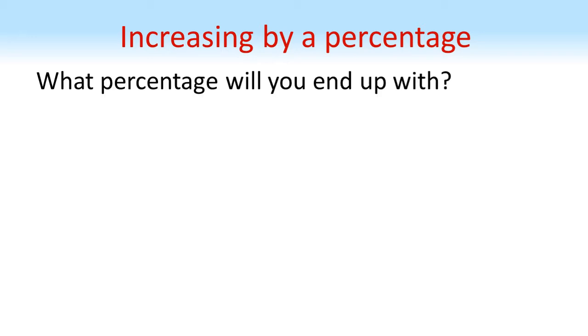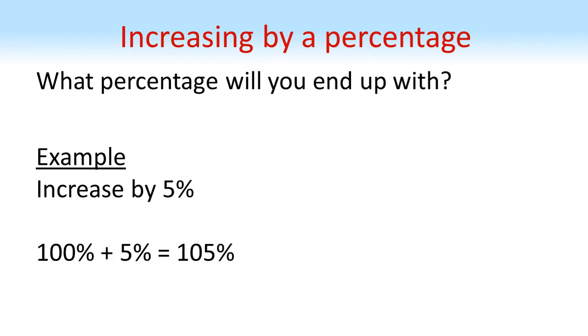The way to do this is to think about what percentage you're going to end up with after the increase. For example, if you're increasing by 5%, you start with 100%, increase by 5%, so you end up with 105%. This is what we're going to use to answer our questions.